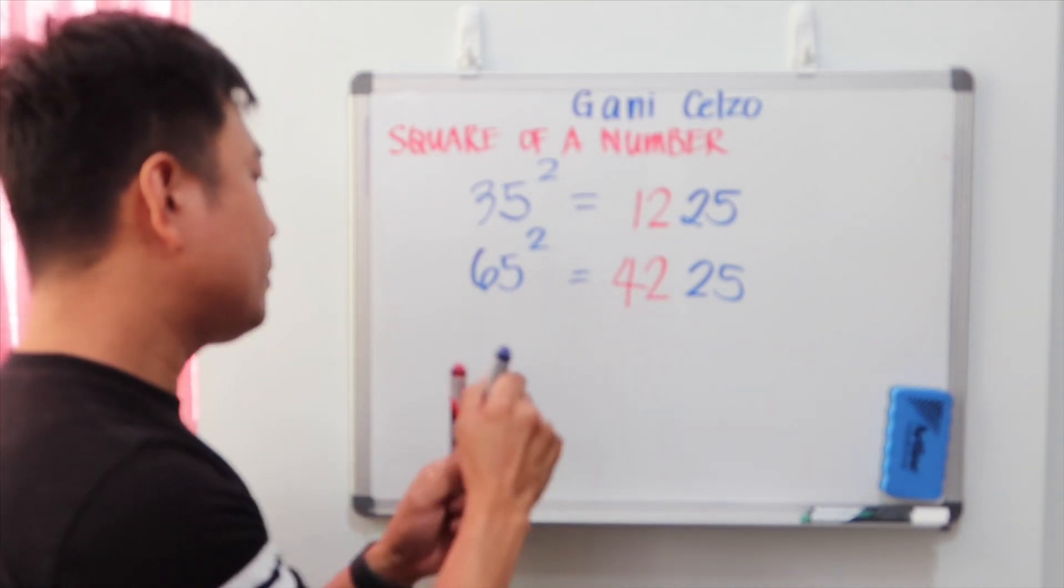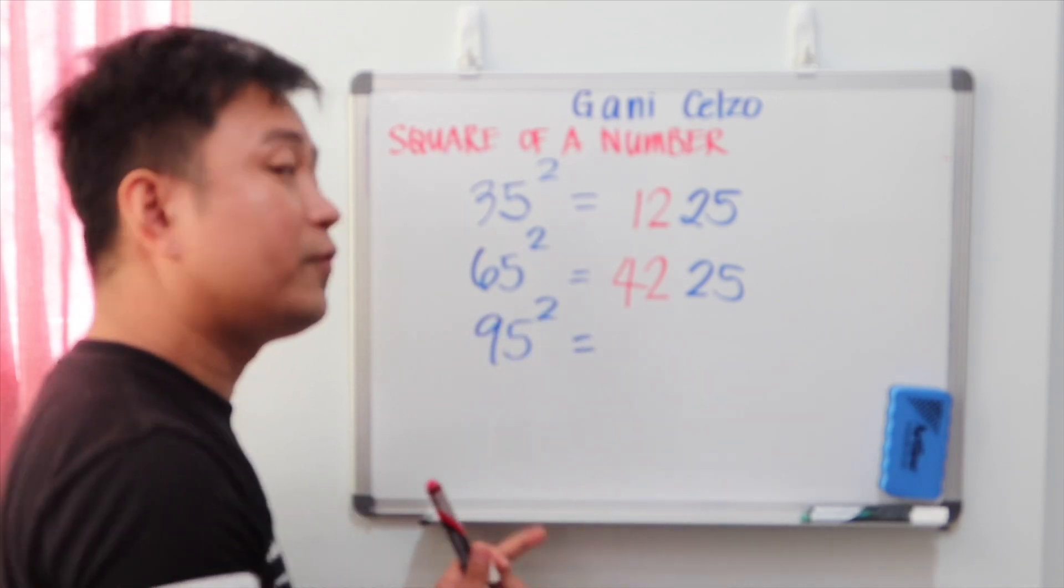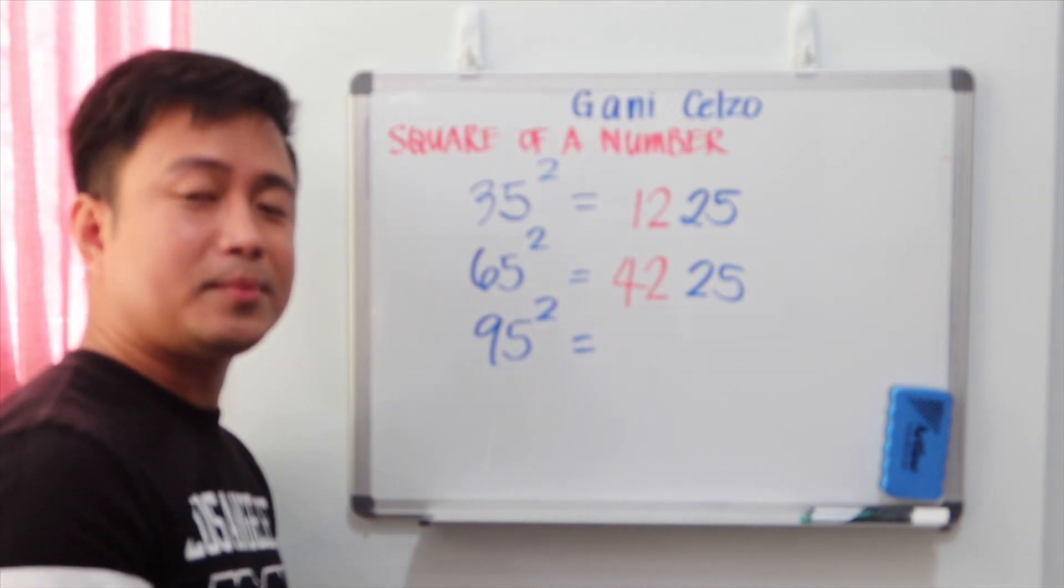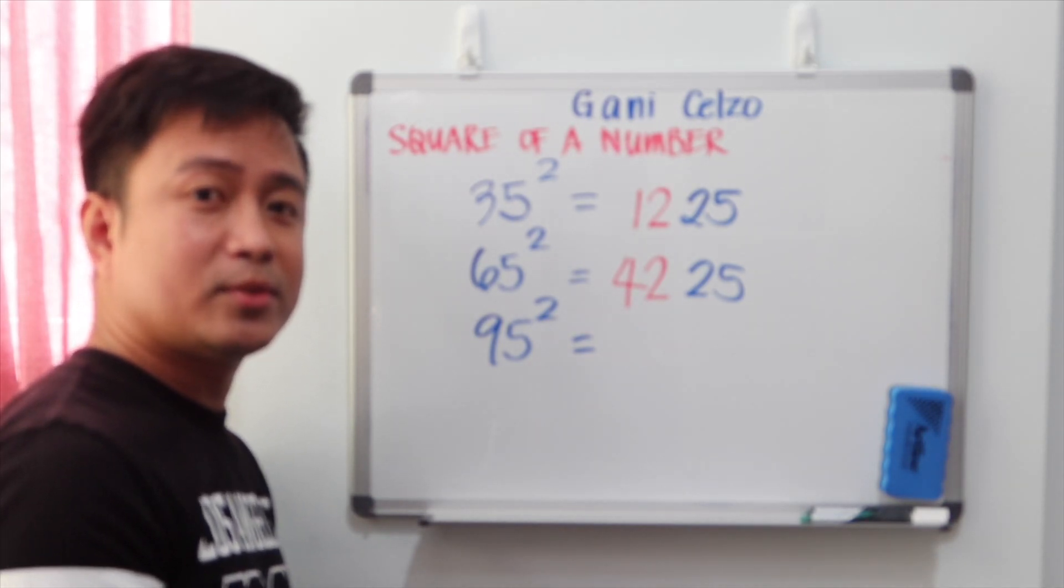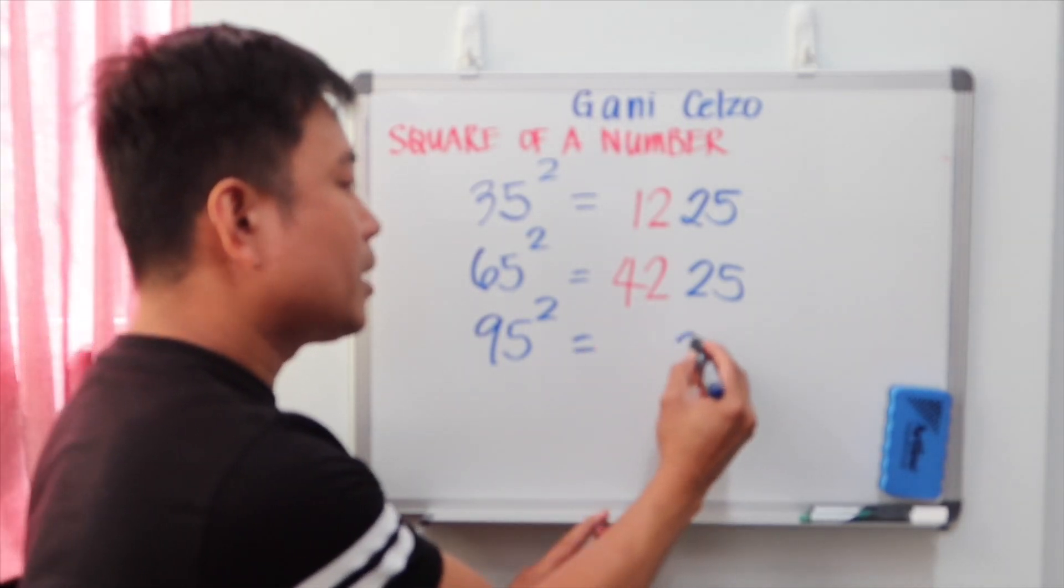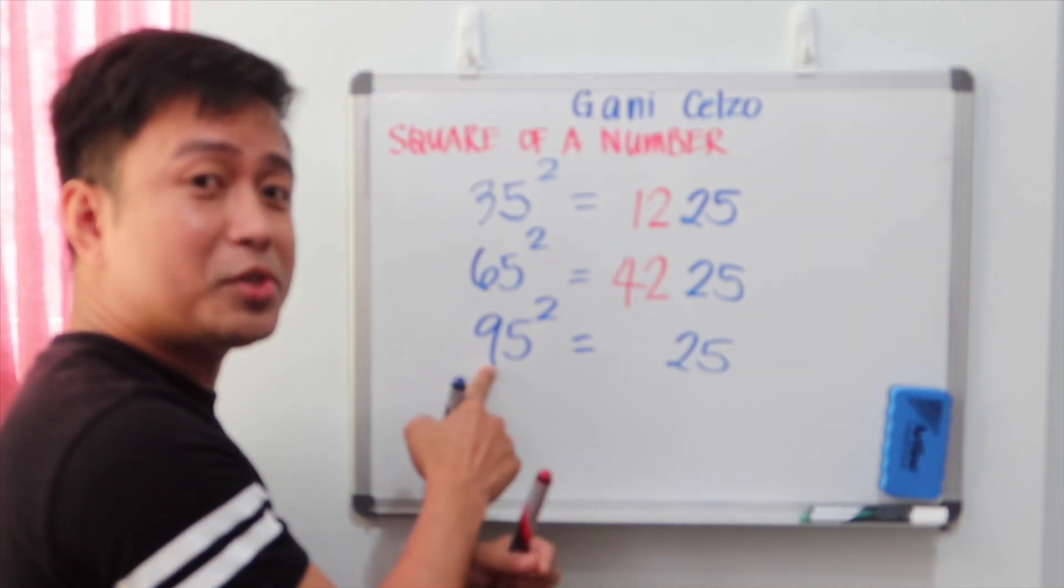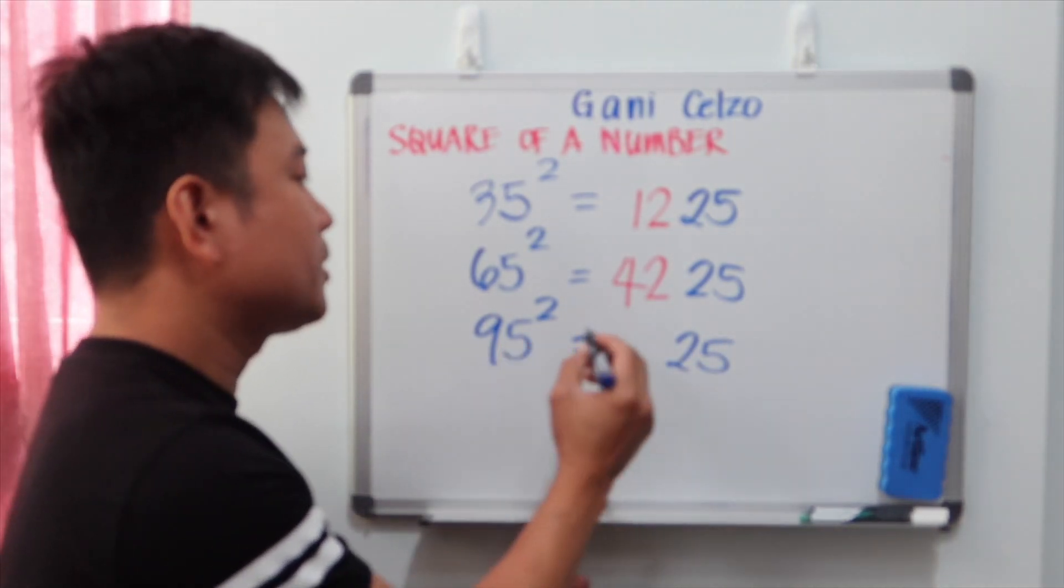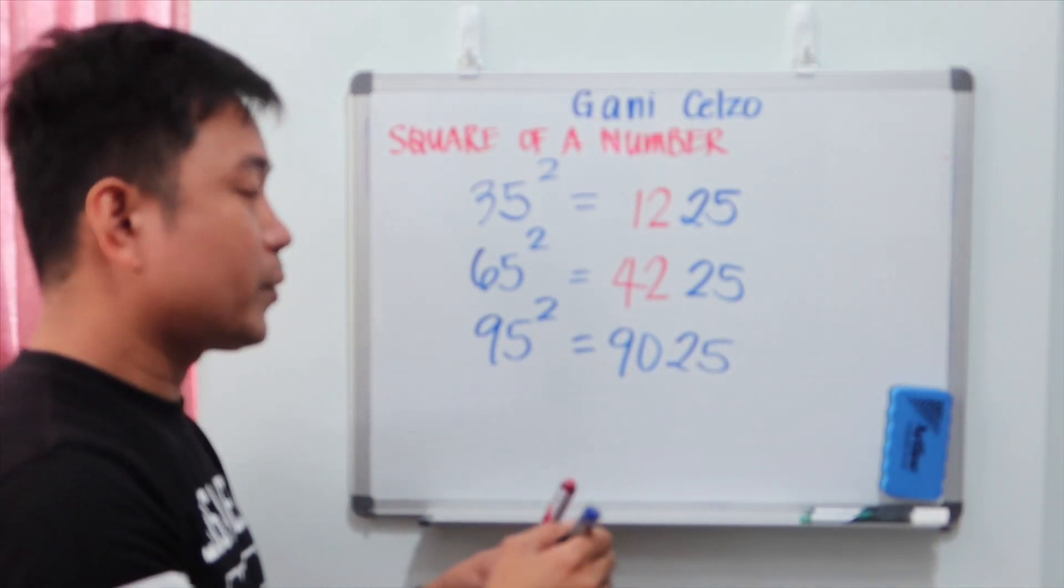Try this problem. 95 square. You have 5 seconds. What's your answer? Yes, it should be 9025. So the same thing. The last two numbers would be 25. And 9 multiplied by 10, so it gives you 90. So that is 9025.